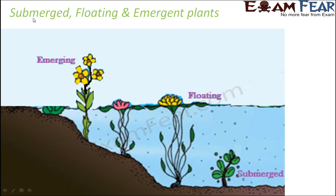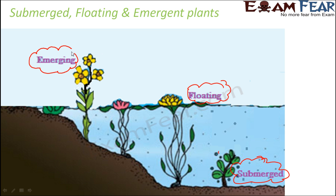To differentiate between the three: submerged plants remain deep inside the water with all parts underwater. Floating plants have their flowers and leaves on the surface, while roots and stems are underwater. Emergent plants grow really tall, so their stems, branches, flowers, and leaves all emerge out of the surface of the water. These are the three categories of aquatic plants.